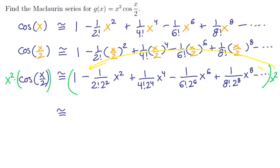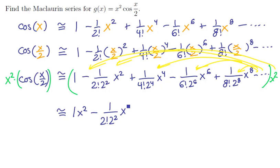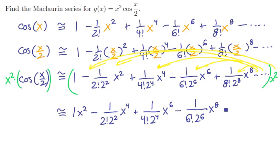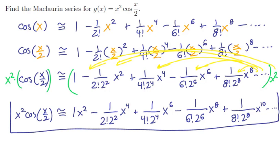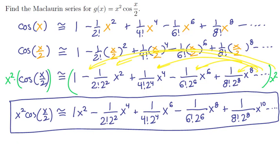And we would have a formula for x squared cosine of x over 2. On the right hand side, we distribute this x squared to all the pieces like a giant polynomial. We would have x squared at the front, minus 1 over 2 factorial times 2 squared times x to the 4th, plus 1 over 4 factorial times 2 to the 4th times x to the 6th, minus 1 over 6 factorial times 2 to the 6th times x to the 8th, plus 1 over 8 factorial times 2 to the 8th times x to the 10th, and so on. This is our Taylor series for x squared times cosine of x over 2, and since this pattern is easily repeatable, this is our answer.